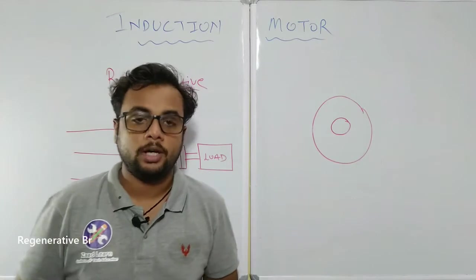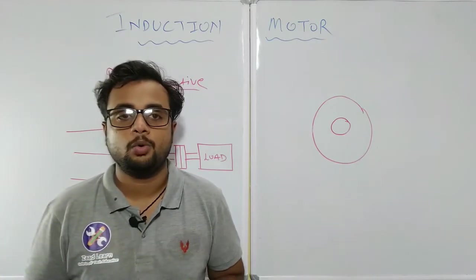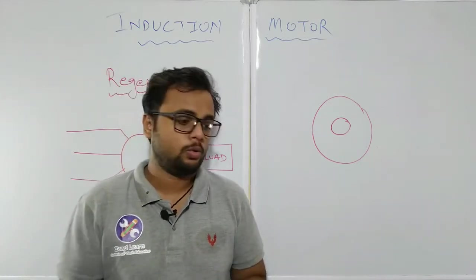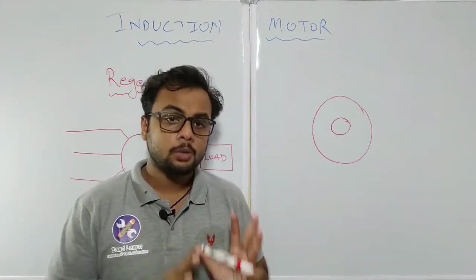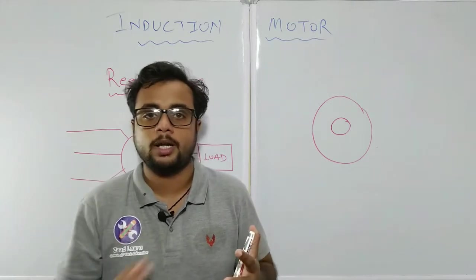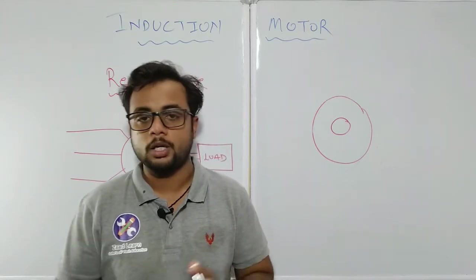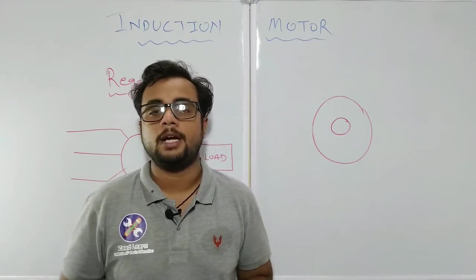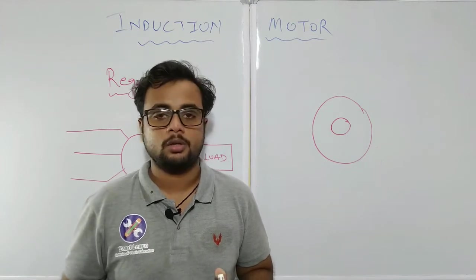In the case of regenerative braking on a DC motor, we have seen that regenerative braking always occurs when the motor starts running as a generator. To make an induction motor act as an induction generator, we have to make certain arrangements.